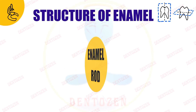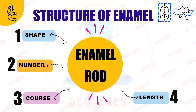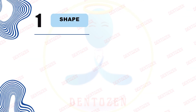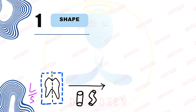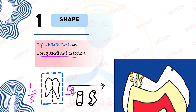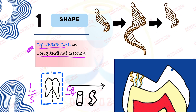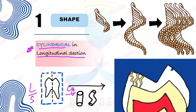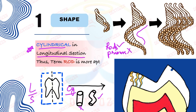Let's talk about enamel rods — their shape, number, course, length, diameter, and appearance one by one. First, the shape of enamel rods in longitudinal section is cylindrical — that is your first important question. They run in a cylindrical form, and though they are not straight cylinders but wavy, they are cylindrical. So 'rod' is a more apt term than 'prism.'